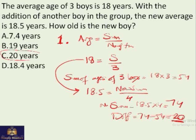There's another easy method to solve this problem. Let's see how it works. First of all, we know that the new entrant is older than the previous ones or is older than the average.